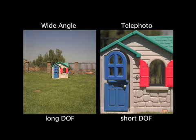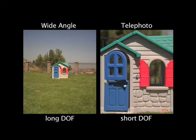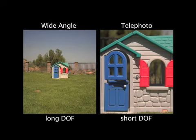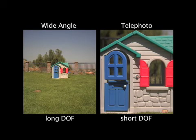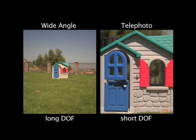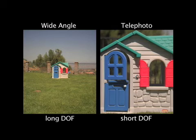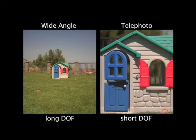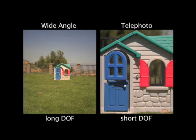In these images, only the focal length of the lens used is different between the two. In the left image, a wide angle lens is used, and you can see that the apparent depth of field is very long. The image on the right is taken by the same camera, with the same settings and from the same distance, but this time using a telephoto lens. The depth of field becomes much shorter. Also notice that the field of view is very narrow in the image taken with the telephoto lens.